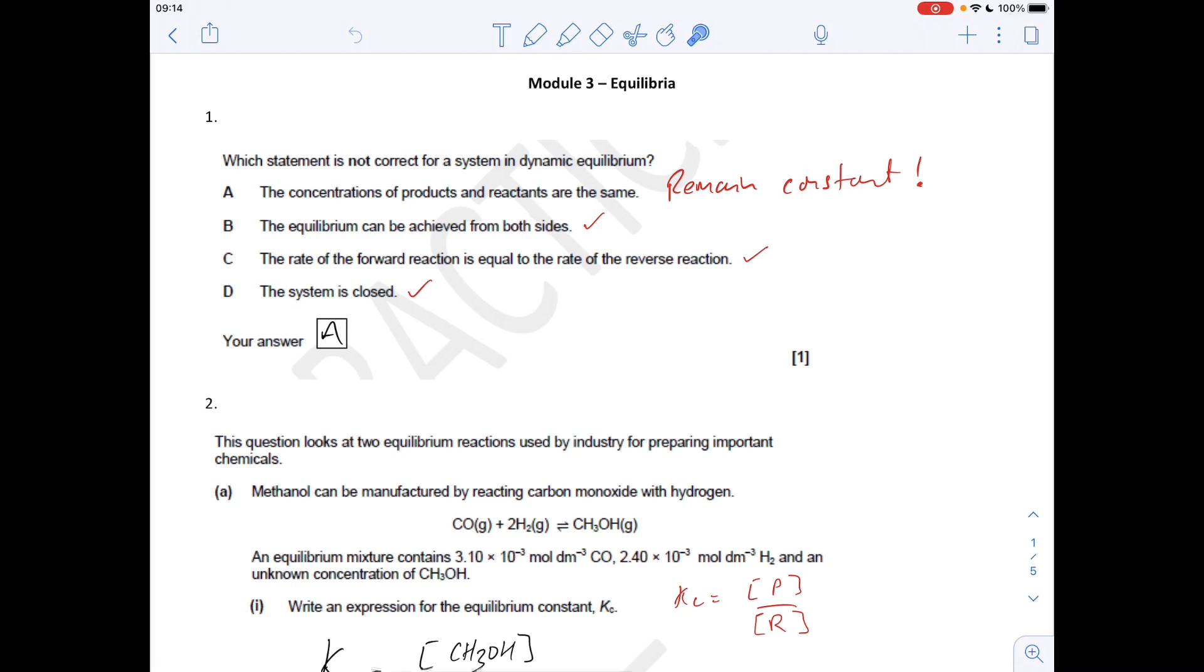Okay, so question one: which is the incorrect statement for a system in dynamic equilibrium? Well, it's the first one. The concentrations of the products and reactants aren't the same, don't have to be the same. They have to remain constant. That's a common mistake I see students thinking that they have to be the same. It's that they have to remain constant. All the other statements are correct, so it was A.